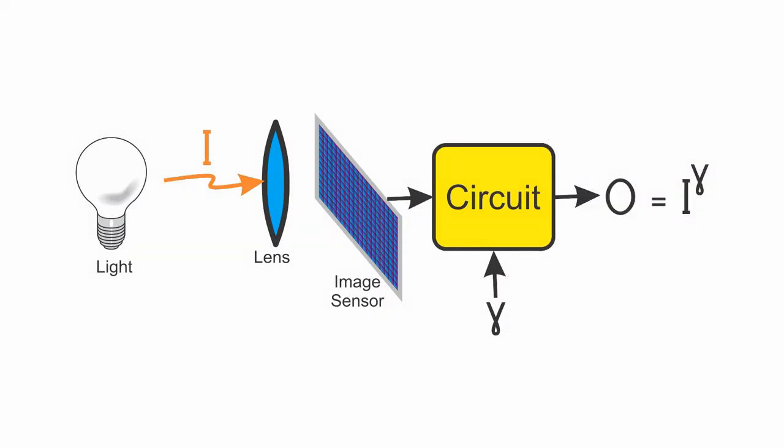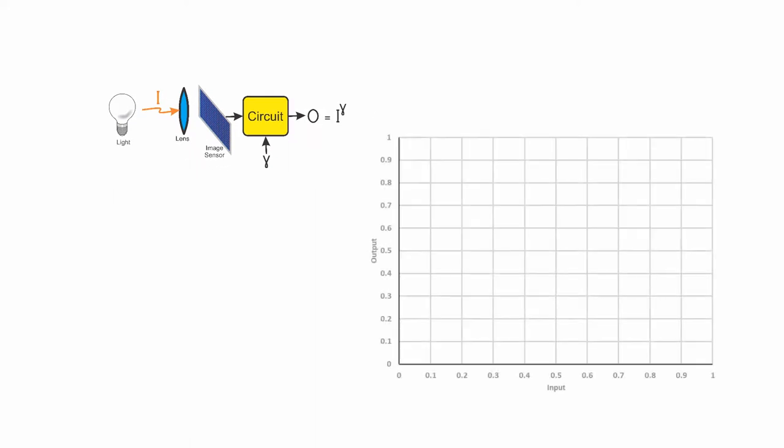There's a common camera parameter, gamma, that mystifies a lot of people, but really it's quite straightforward. Suppose you have an input shown here as I. Also suppose you have a processing circuit with a gamma that has an output O. Then O is proportional to I raised to the gamma power. In machine vision work, we almost always want our camera's gamma to be one, so that the image data is proportional to the light falling on the image sensor.